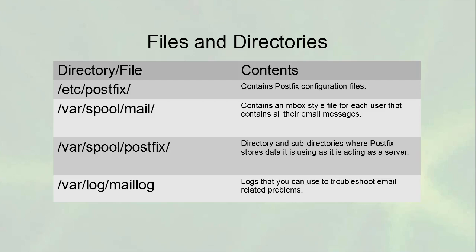There are many different directories involved with mail servers. The /etc/postfix directory contains all the configuration information for the Postfix server. The /var/spool/mail directory contains all the email that has been received, processed, and put into users' files — essentially an inbox-style file that lists all email messages one after another in one long text file. The /var/spool/postfix directory is where Postfix stores data it's currently using.